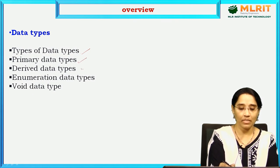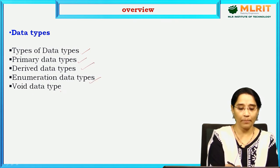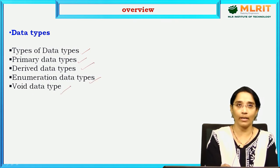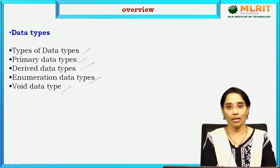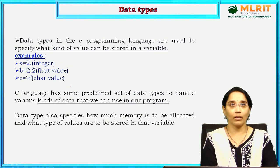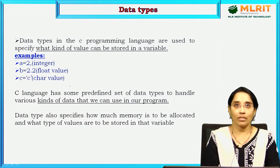Primary data types, derived data types, enum data type, and void data type. Let us see each and every one, one by one.